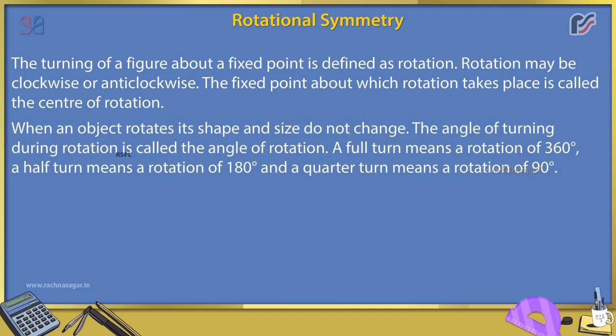When an object rotates, its shape and size do not change. The angle of turning during rotation is called the angle of rotation. A full turn means a rotation of 360 degrees, a half turn means a rotation of 180 degrees, and a quarter turn means a rotation of 90 degrees.